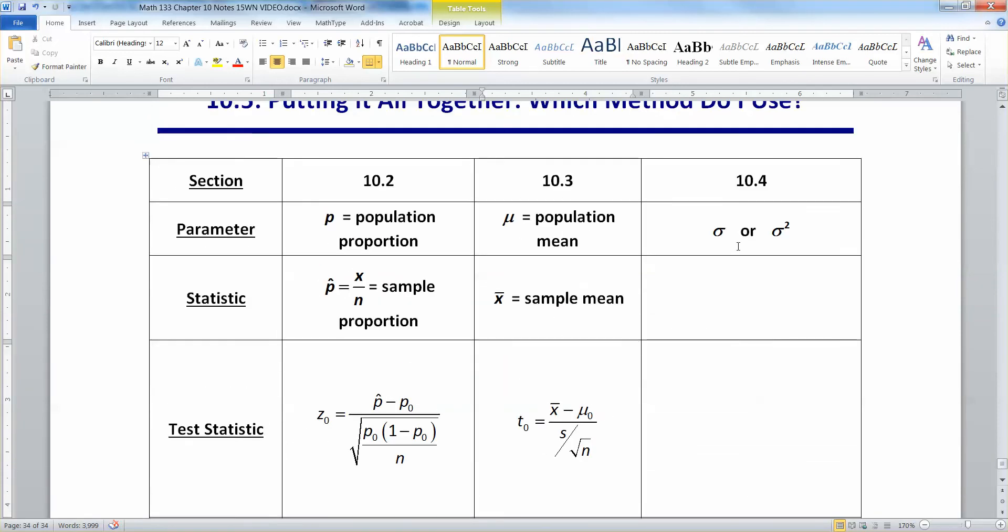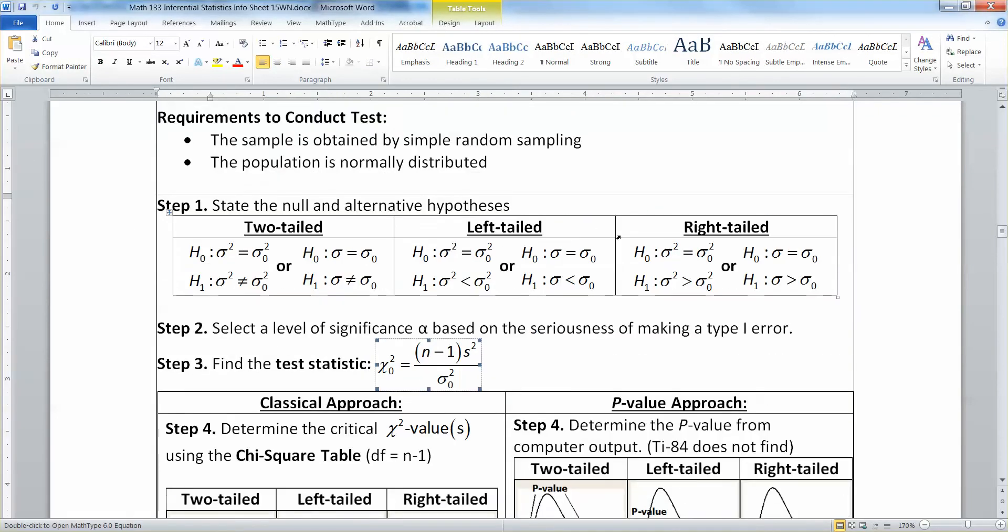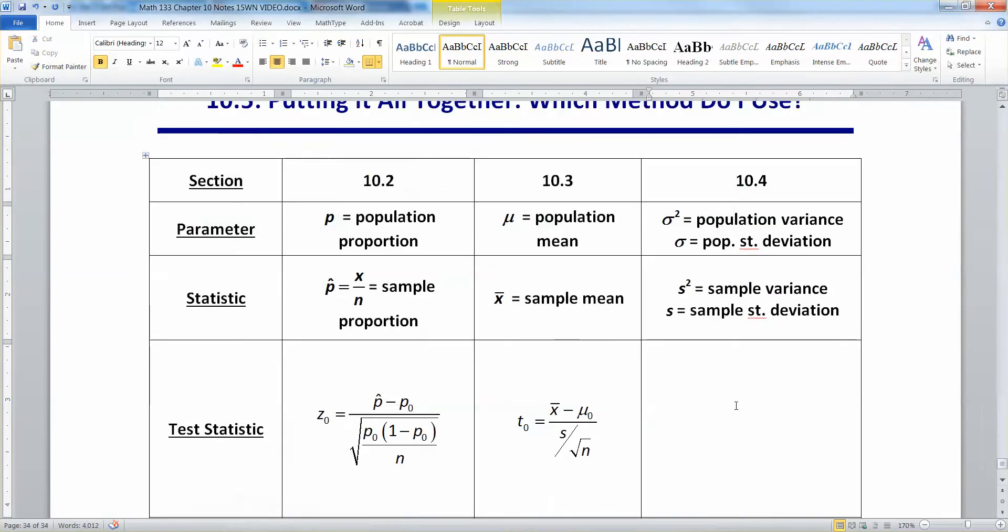All right. Then the last one, the worst one in its way, is the one for variance or standard deviation. Right? So σ², if you recall, is variance. σ is standard deviation. So we use sample variance to test population variance and sample standard deviation to test population standard deviation. Now, the test statistic for this, scrolling down, is right here. χ0² equals n minus 1 times s² over σ0².